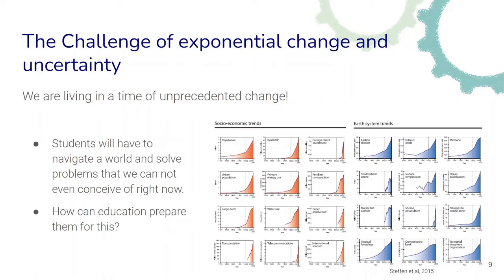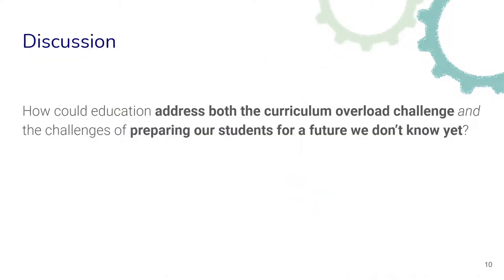Another challenge is that of exponential change and uncertainty. We are now living in a time of unprecedented changes. Looking at these graphs, there are socioeconomic trends that are accelerating more and more, as well as ecological Earth system trends that are also accelerating. Students will have to navigate a world and solve problems that we cannot even conceive of right now — we don't really know what will happen in 20 years. So the question is: how can education prepare students for this, if we're not even sure what kind of world they will be living in when they grow up?